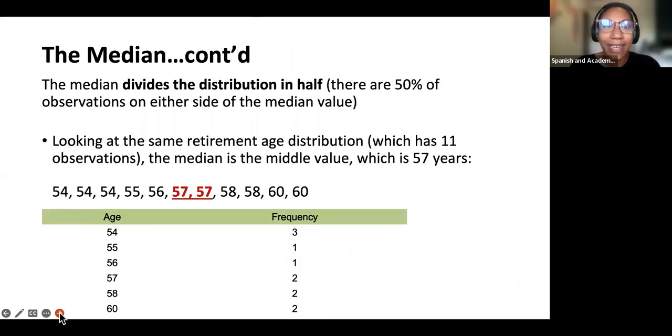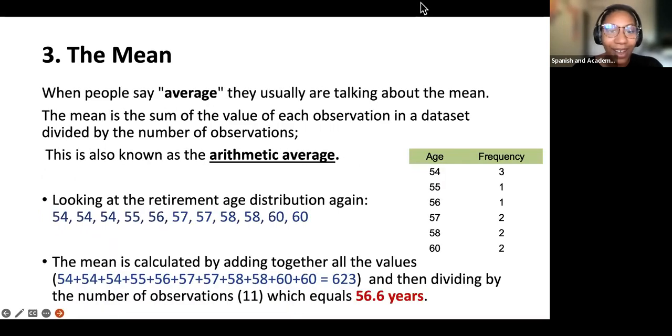Going into more detail about the median, the median divides the distribution in half. So if you see a test question that says which measure of central tendency represents 50% of the distribution, then that would be the median. Looking at the same retirement age distribution as we did before with the mode, which has 11 observations, the median value would be 57. As you can see here, that's the number that falls in the middle.